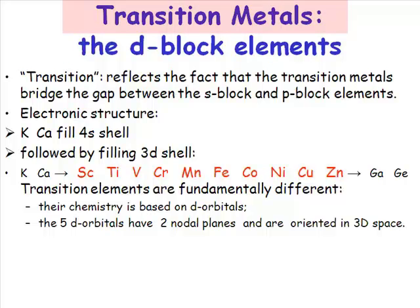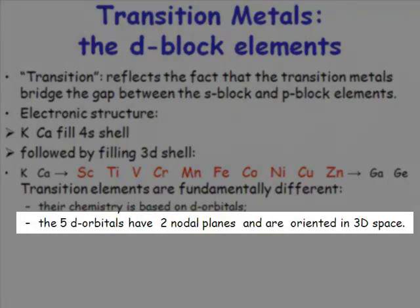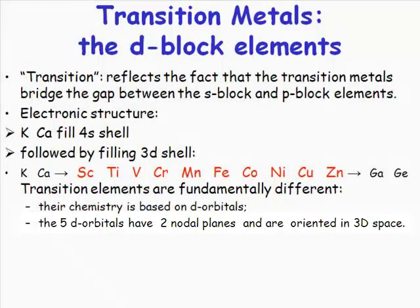We normally talk about transition metal chemistry as being the chemistry of partially filled d-orbitals. D-orbitals have two nodal planes and they're very much directional in three-dimensional space. And this directionality that d-orbitals have has all sorts of consequences for our chemistry.